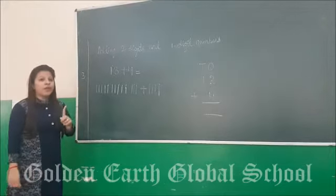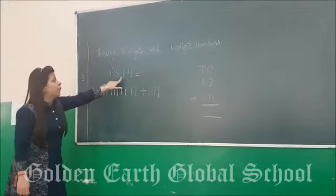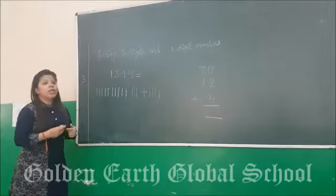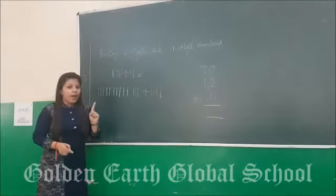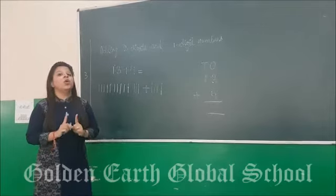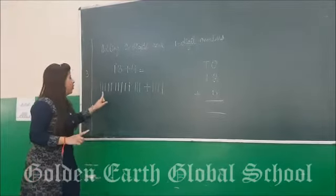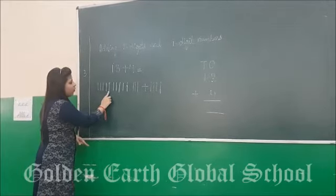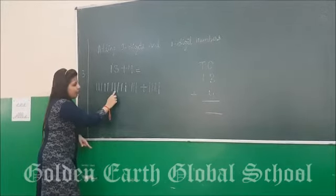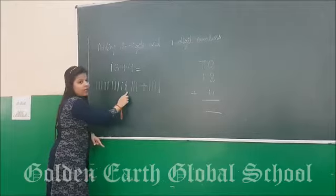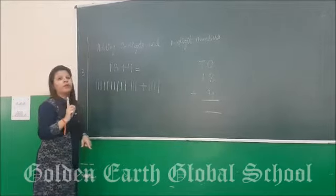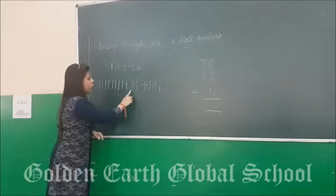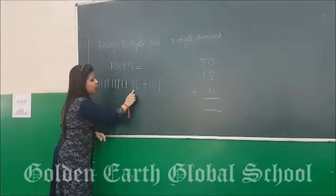Third part. Now we have to add 13 plus 4. In 13 we have 1 ten and 3 ones. So draw 10 lines: 1, 2, 3, 4, 5, 6, 7, 8, 9, 10. This is a group of 10. For the 3 ones, draw 3 lines: 1, 2, 3.